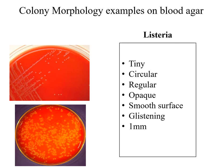Another example is Listeria species, or Listeria monocytogenes. The colonies are very tiny, around 1 mm or even less. They are circular, regular, opaque, with a smooth surface, and they are glistening.